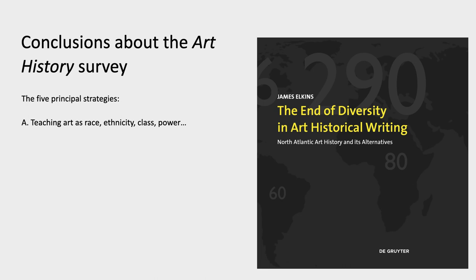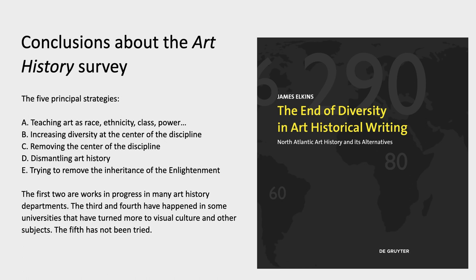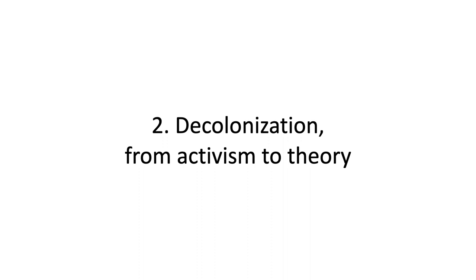To recap the five principal strategies: first, teaching art as or for race, ethnicity, class, power, and other issues; second, increasing diversity at the center of the discipline, dividing and de-centering it; third, removing the center of the discipline entirely; fourth, dismantling art history as a discipline; and fifth, trying to remove the inheritance of the Enlightenment. The first two are works in progress in a number of art history departments worldwide. The third and fourth have happened in some universities, especially those that have turned more to visual culture. The fifth hasn't been tried, and seems the most interesting. These are all open questions.